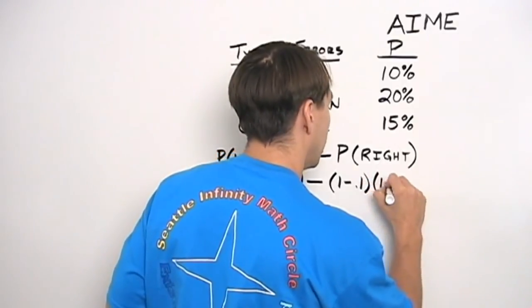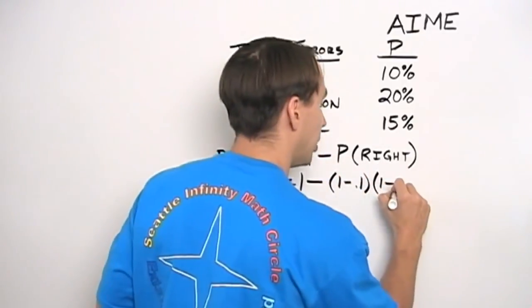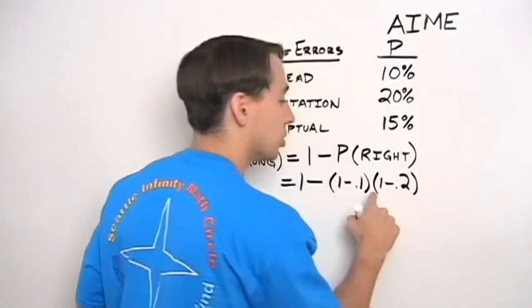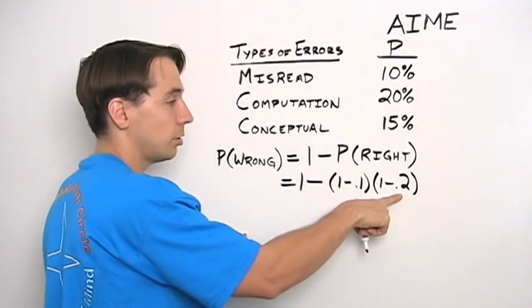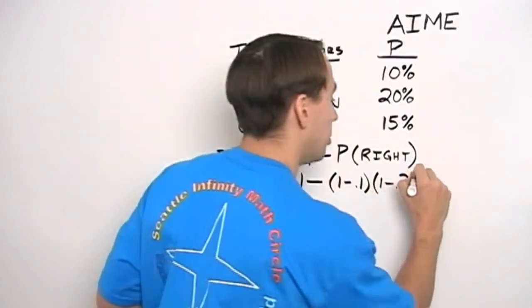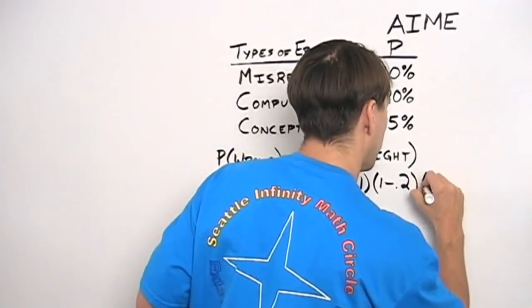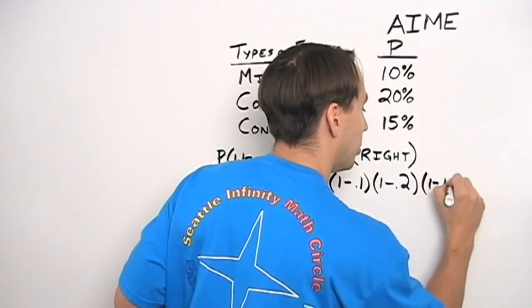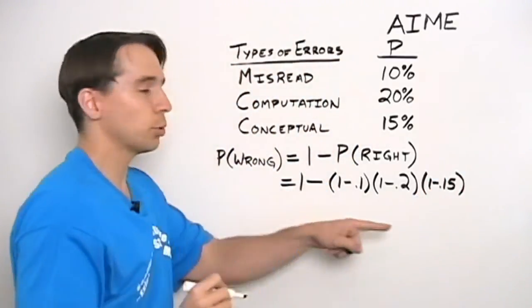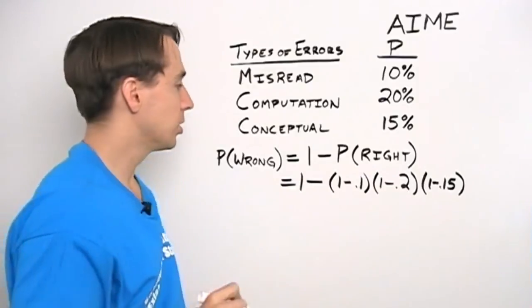And similarly, the probability that I don't make a computation mistake is just 1 minus the probability that I do, which is 20 percent or two-tenths. So 1 minus 0.2 is the probability that I don't make a computation mistake. And then finally, the probability that I don't make a conceptual error is just 1 minus 0.15.